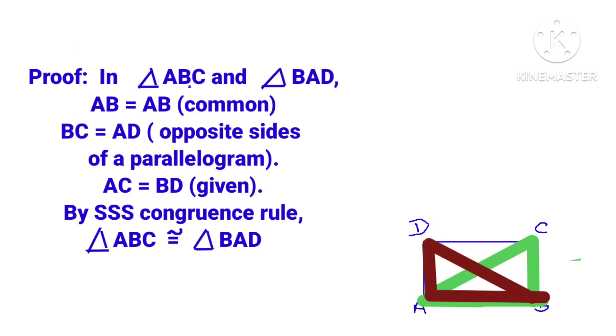In triangle ABC and triangle BAD, we have AB is equal to AB, common. BC is equal to AD, opposite sides of a parallelogram. AC is equal to BD, given. By SSS congruence rule, triangle ABC is congruent to triangle BAD.